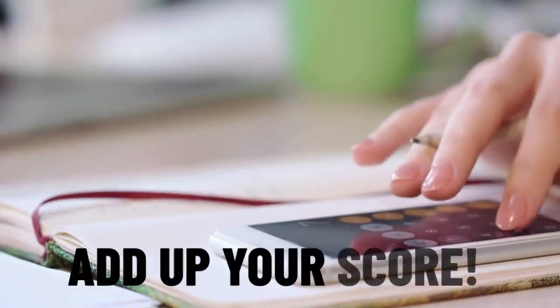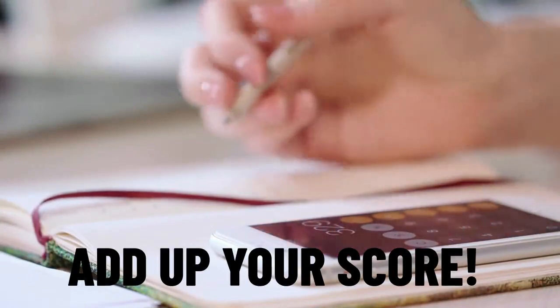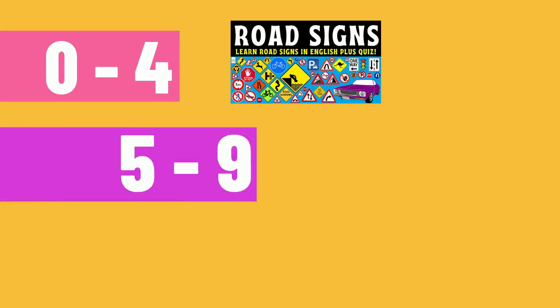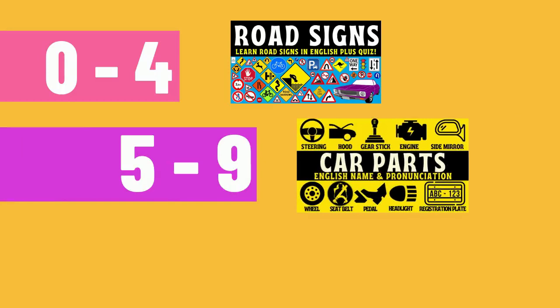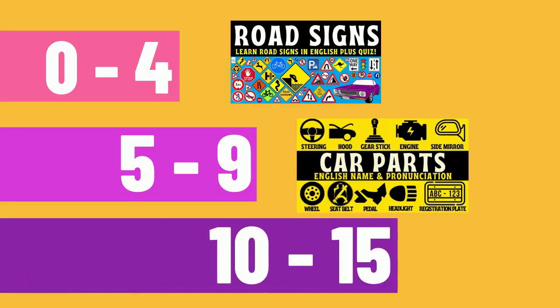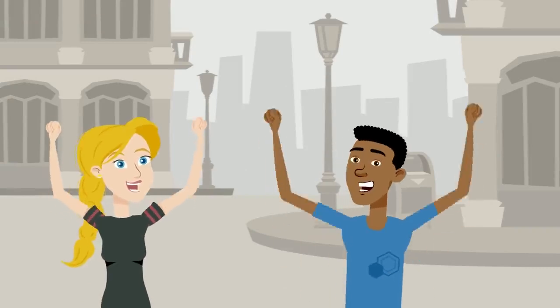And that brings us to the end of our English quiz. Now it's time to add up your score. If you struggled a bit and got points from 0 to 4, I would recommend to re-watch the road signs vocabulary video. If you scored between 5 and 9, well done — I'd recommend to boost your vocabulary some more and check out my English vocabulary lesson on car parts. And if you scored between 10 and 15, congratulations, you are top of the class and you did really, really well. Well done to everyone who participated in today's quiz.